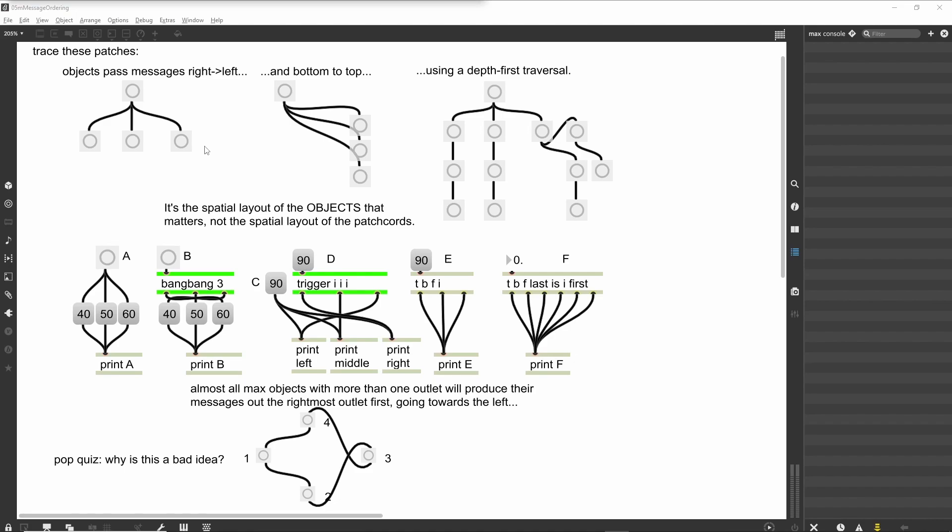Right to left, bottom to top. Take a look at the tutorial patcher. This file has a number of small patches that we will use to learn about the rules that messages follow. Click on topmost button in the top left patch. It seems that all three of the connected button objects fire simultaneously. This is an illusion - messages are sent down the patch cables in a sequential order.